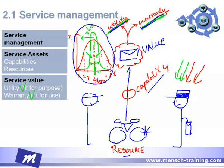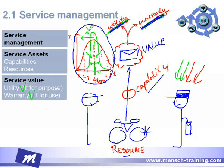Recapping: resources combined with the capability will deliver value to the customer. Value has two important components — utility, which is getting the mail delivered, and warranty, which is making sure that it's being delivered at the same time every day.